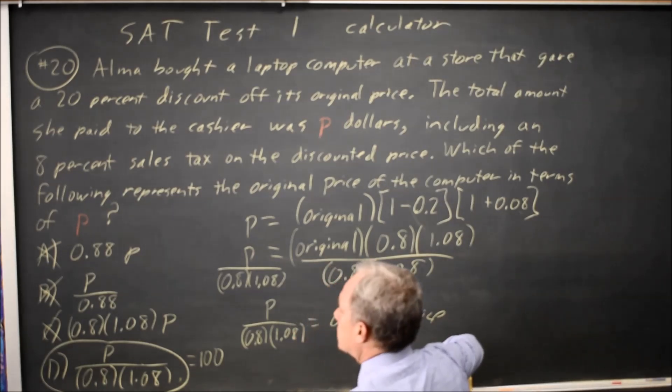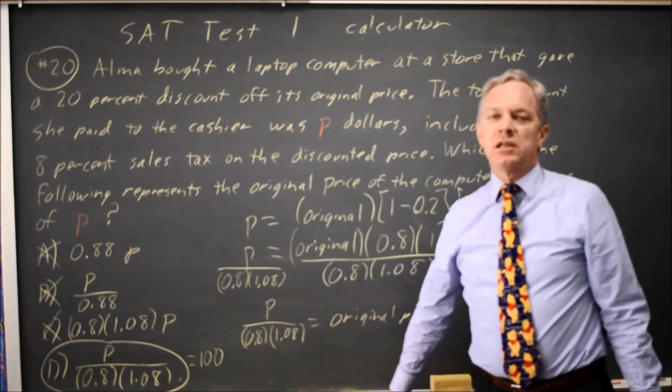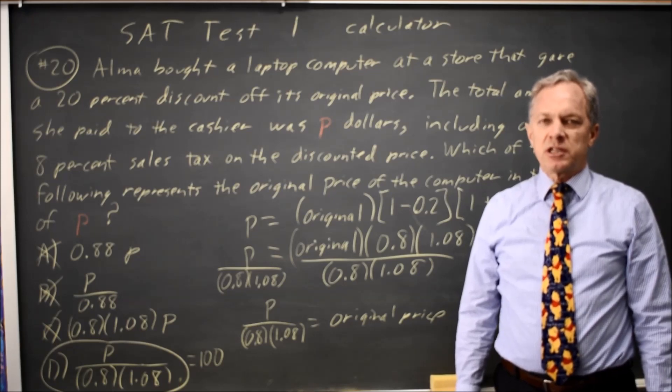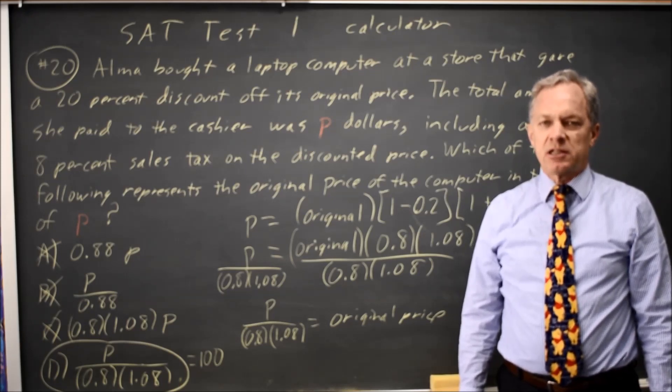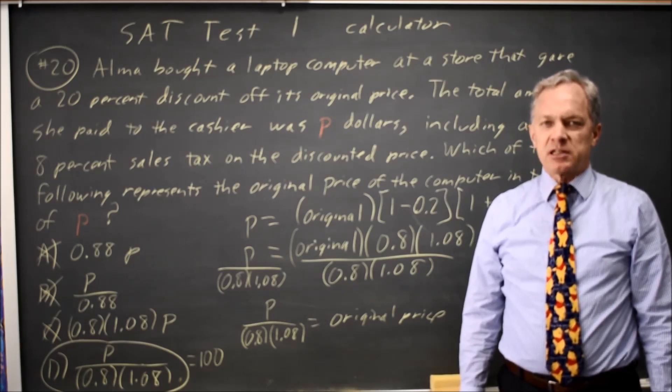And that's the expression they're asking for. So it would be choice D. But I feel much more comfortable choosing a number for the original price and then doing the arithmetic on that, rather than doing the algebra where I might get confused.